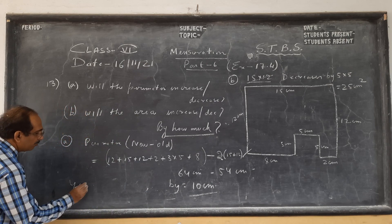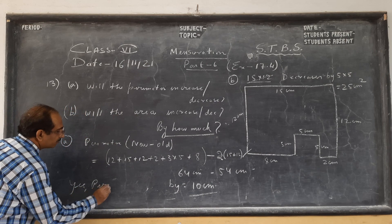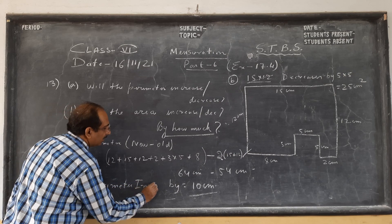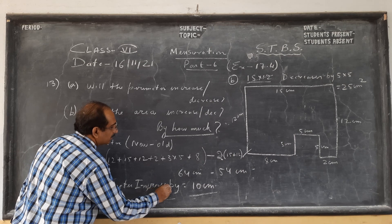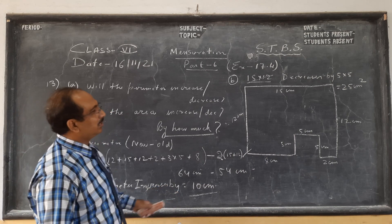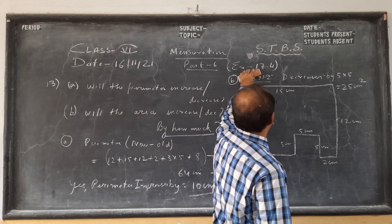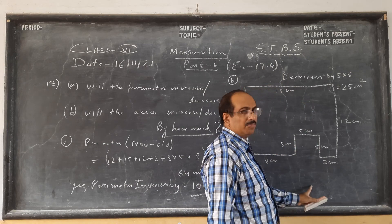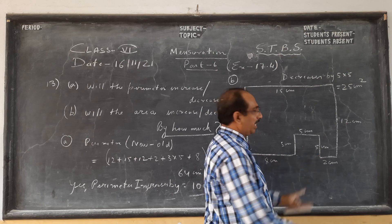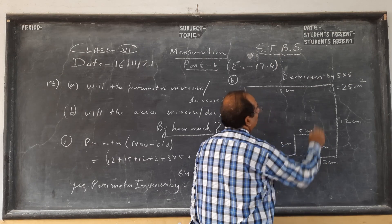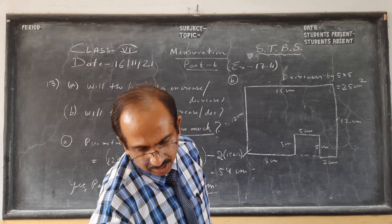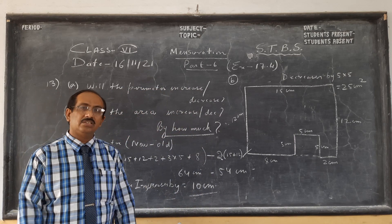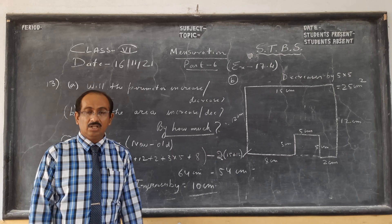Perimeter increases by 10 centimeters, and you do not need to find the full area — just note it decreases because we are cutting a piece out. It decreases by 5 into 5 equals 25 centimeter square. So this was a very interesting chapter. With this we come to the end of this video lesson. Thank you children for watching this video.